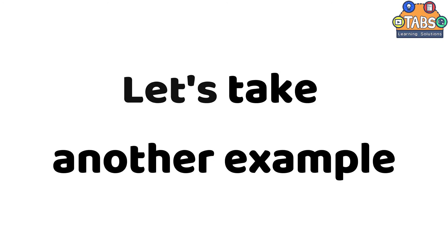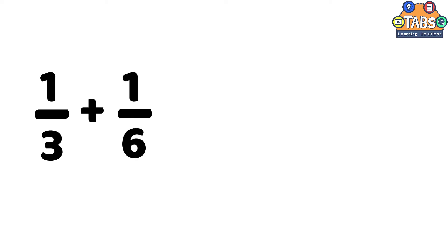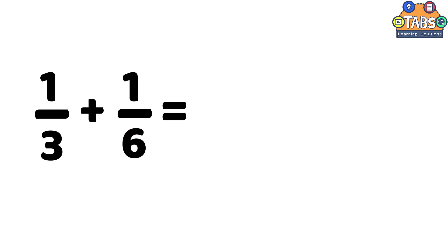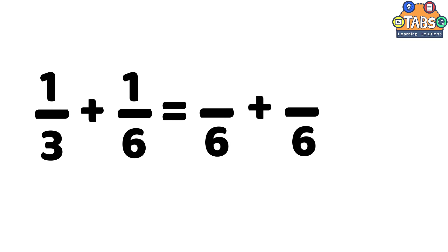Let's take another example: 1 third plus 1 sixth. In this example, the numbers at the bottom, or denominators, are not the same. So we need to make them the same before we can continue, because we can't add them like that. We need to get the least common denominator of 3 and 6. In this case, the LCD is 6, so we have 6 as the common denominator.